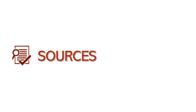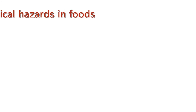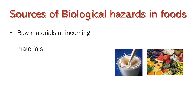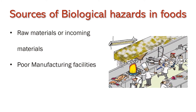What are the probable sources of biological hazards in our food and food products? It may be raw materials or incoming materials, because raw materials and incoming materials may become contaminated with microbial growth and their toxins during harvesting, storage, and transportation of the material.